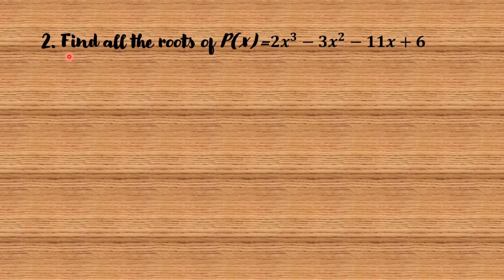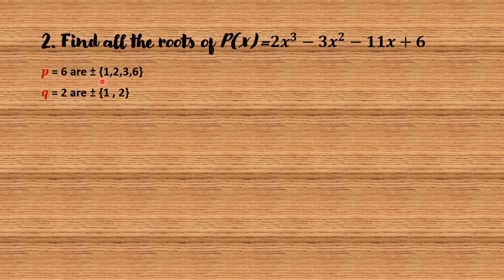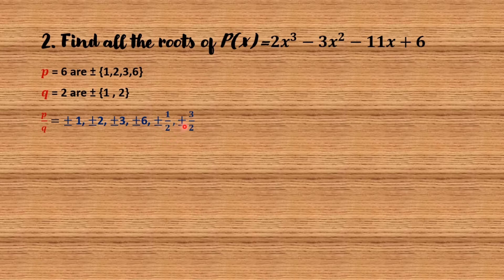Number 2: Find all the roots of p of x equals 2x cubed minus 3x squared minus 11x plus 6. The value of p equals 6 and the value of q is 2. The factors of p are positive and negative 1, positive and negative 2, positive and negative 3, and positive and negative 6. The factors of q are positive and negative 1, and positive and negative 2. So the possible rational roots are positive and negative 1, positive and negative 2, positive and negative 3, positive and negative 6, positive and negative one half, and positive and negative three halves.